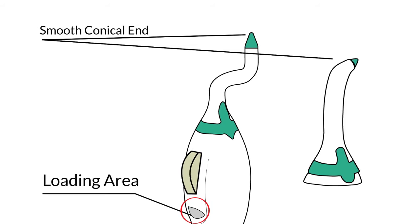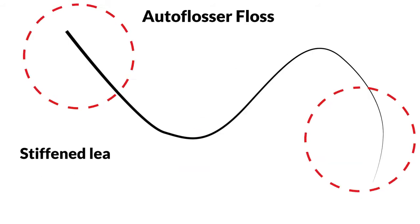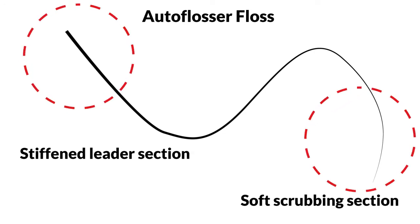One tip is offset and the other universal. The AutoFlosser floss has a stiffened leader section and a soft scrubbing section.